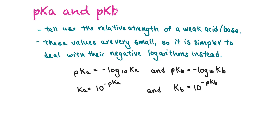We can also use pKa and pKb, very much like pH and pOH, to express the relative strength of a weak acid or base. Because Ka and Kb values are very small, it is much simpler to work with their negative logarithms. So pKa equals negative log of Ka, and similarly for pKb. If you have the pKa and want Ka, that equals 10 to the negative pKa. Using a smaller number — for example, a pKa instead of 1.67 × 10⁻⁸ — is much easier.